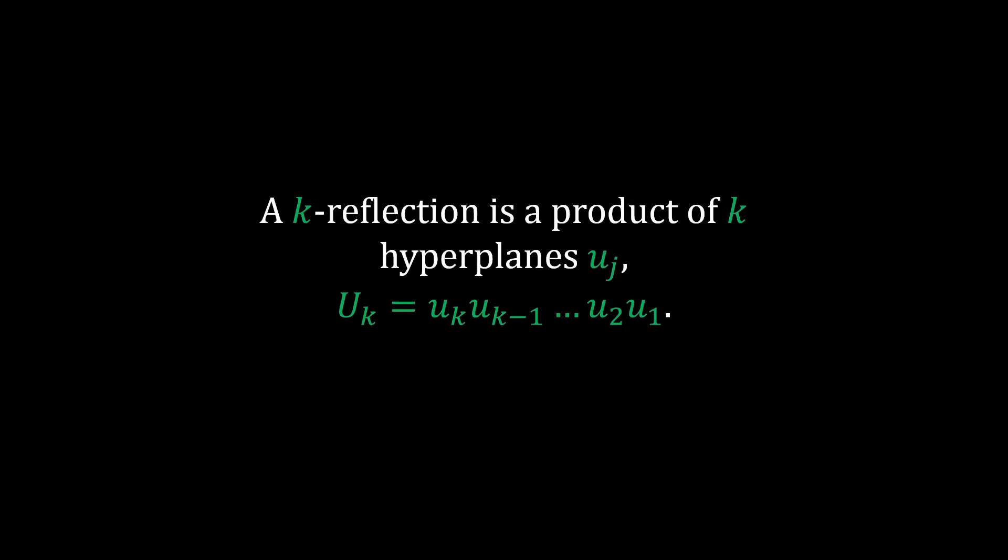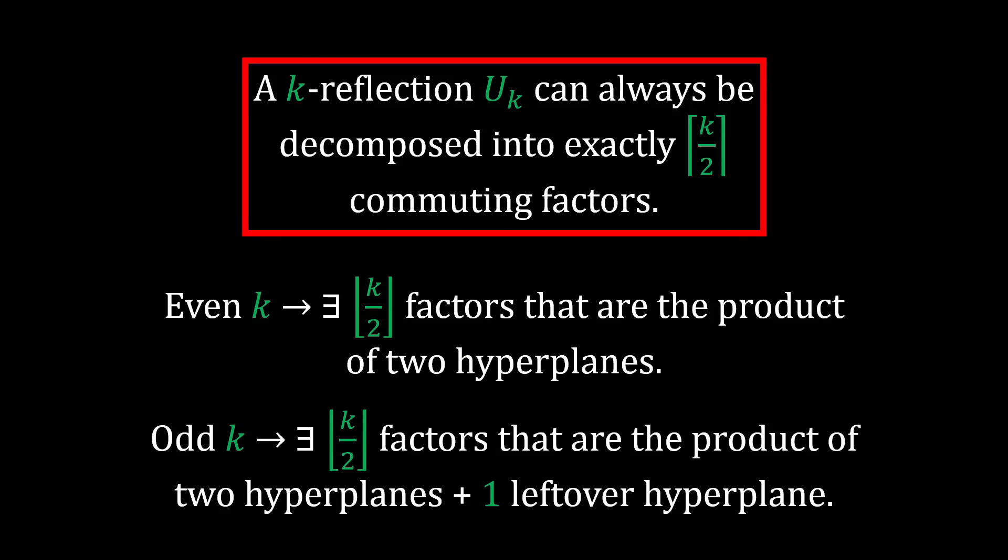Before giving this decomposition theorem, there is another jargony word to know. This term is the k-reflection. A k-reflection is simply the product of k individual hyperplanes, and it is written as U sub k. It is referred to as a reflection because it is the chaining of many reflections under the same sandwich product. Knowing this,